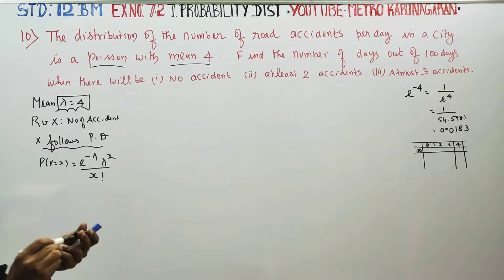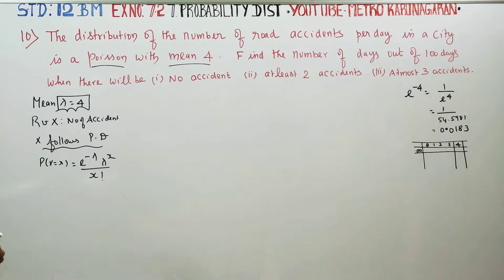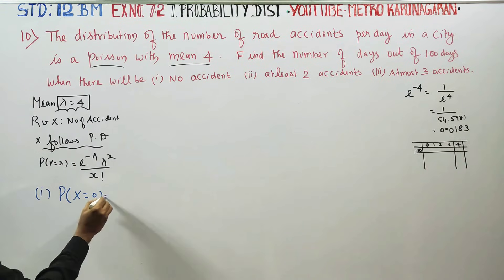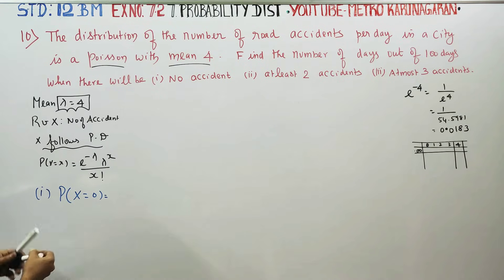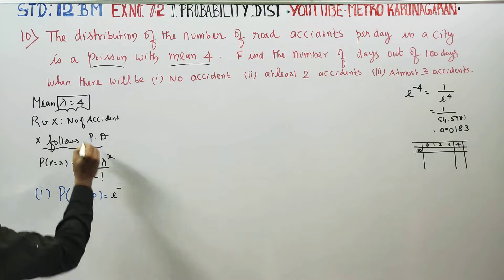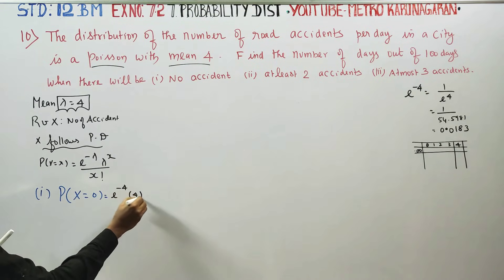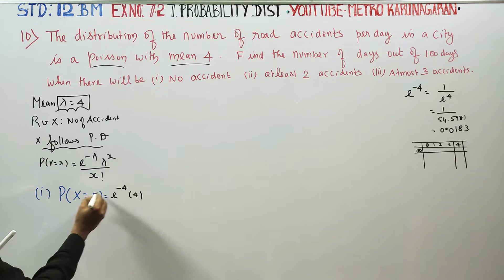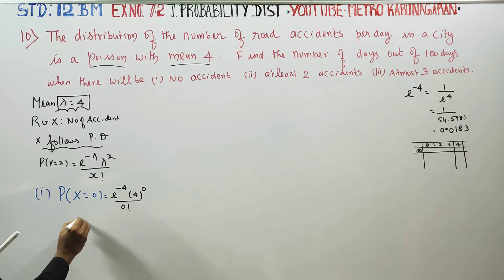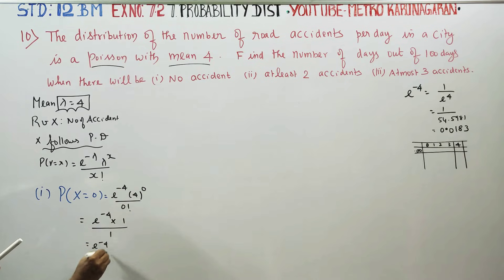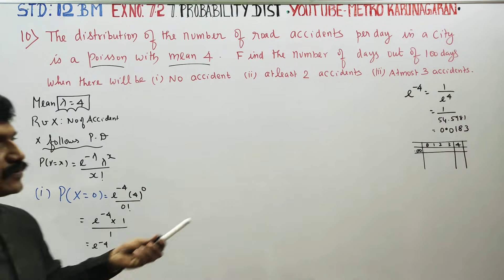First, sum number 1: find the probability of no accident. Here x is equal to 0 for no accident. Substituting into the formula: P(X=0) = e power minus lambda, with lambda equal to 4, so it becomes e power minus 4, multiplied by 4 power 0, divided by 0 factorial, which equals e power minus 4, since 4 power 0 is 1 and 0 factorial is 1. So the answer is e power minus 4.